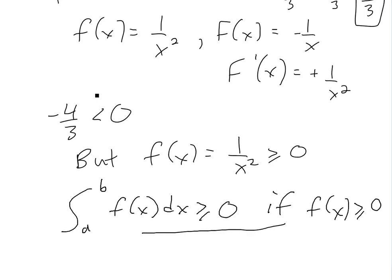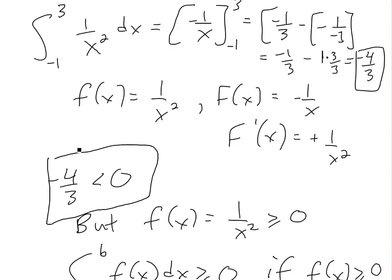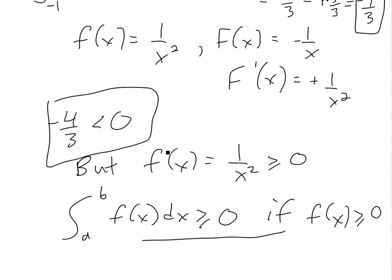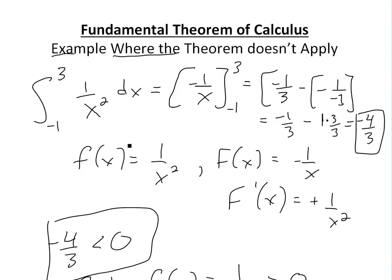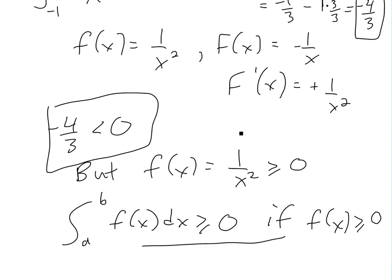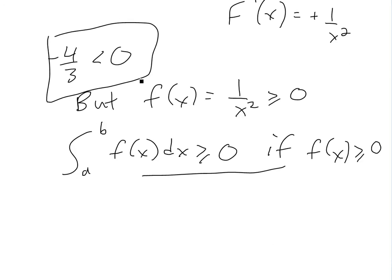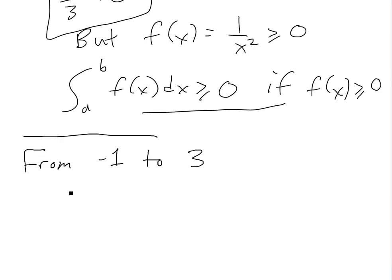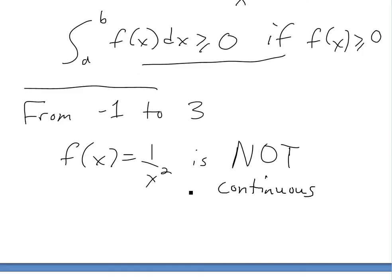This answer violates that property. The reason why it's wrong is because this function is not continuous on this interval. From negative one to three, f of x equals one over x squared is not continuous here. The fundamental theorem of calculus applies only for continuous functions.